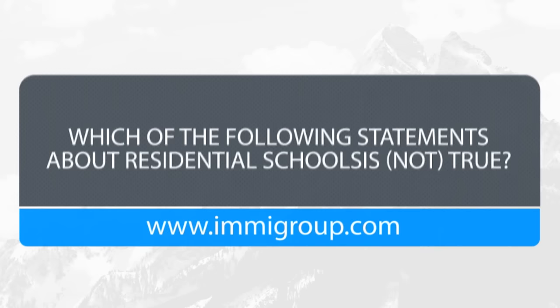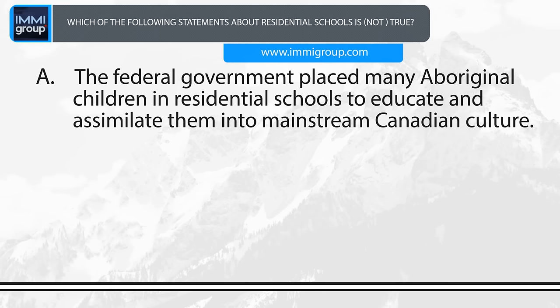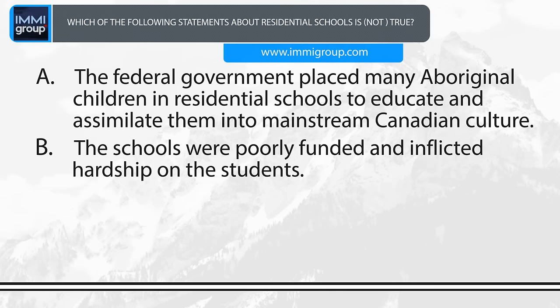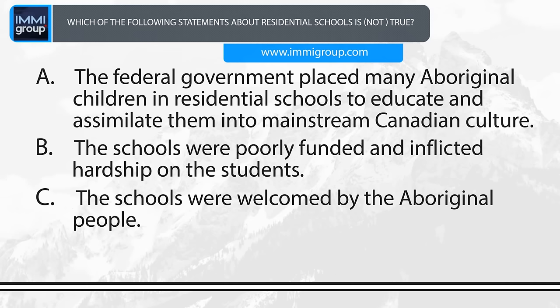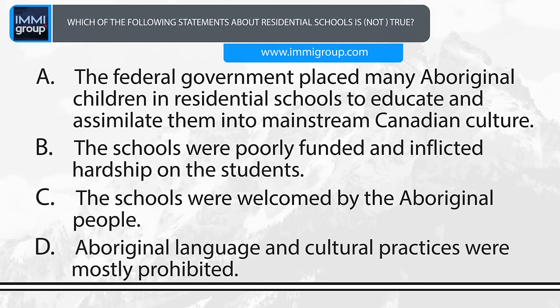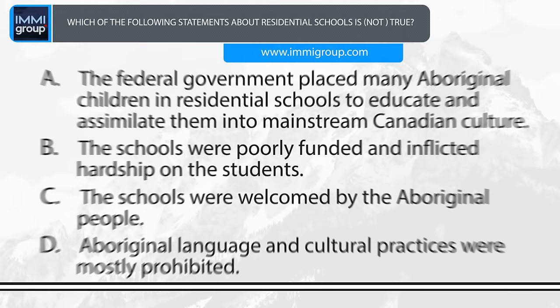Which of the following statements about residential schools is not true? A. The Federal Government placed many Aboriginal children in residential schools to educate and assimilate them into mainstream Canadian culture. B. The schools were poorly funded and inflicted hardship on the students. C. The schools were welcomed by the Aboriginal people. D. Aboriginal language and cultural practices were mostly prohibited. Answer: The schools were welcomed by the Aboriginal people.